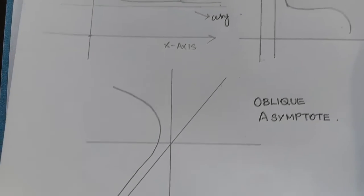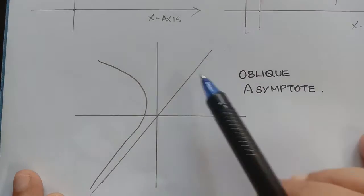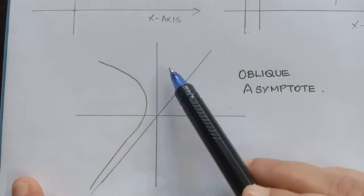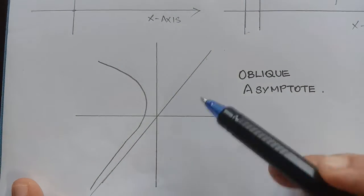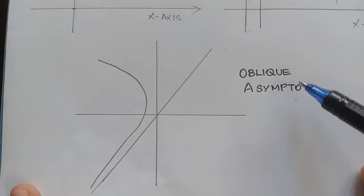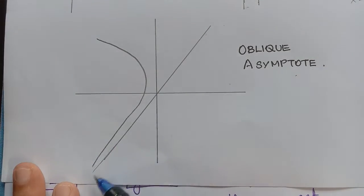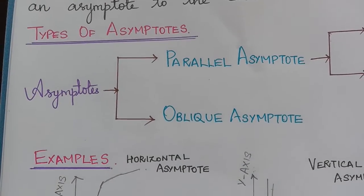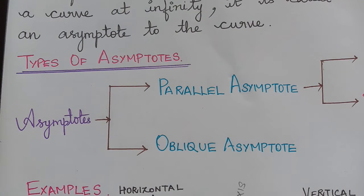In the third example, we have a curve and the asymptote to the curve is neither parallel to the x-axis nor parallel to the y-axis. So this line is said to be the oblique asymptote, and this asymptote approaches the curve at infinity. These are the three examples under horizontal asymptote, vertical asymptote and oblique asymptote.